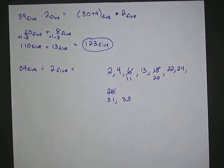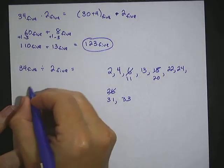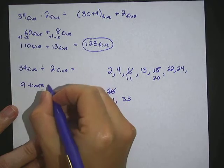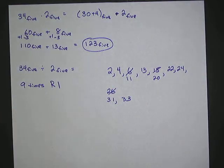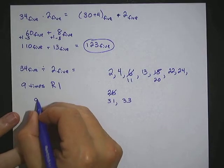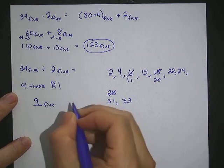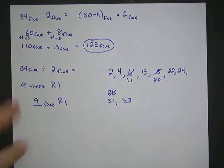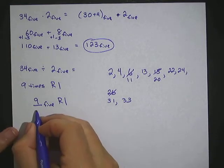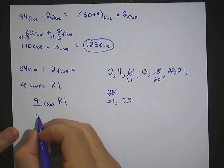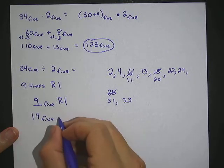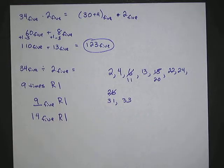So 2 base 5 went into 34 base 5 nine times — but that's 9 in base 10 — with a remainder of 1. We need to convert that 9 into a value workable in base 5. Since 9 is too large for a single digit in base 5, we subtract 5 and add 1 to the next digit: 9 minus 5 is 4, and we carry 1, giving 14 base 5. So the answer is 14 base 5 remainder 1.